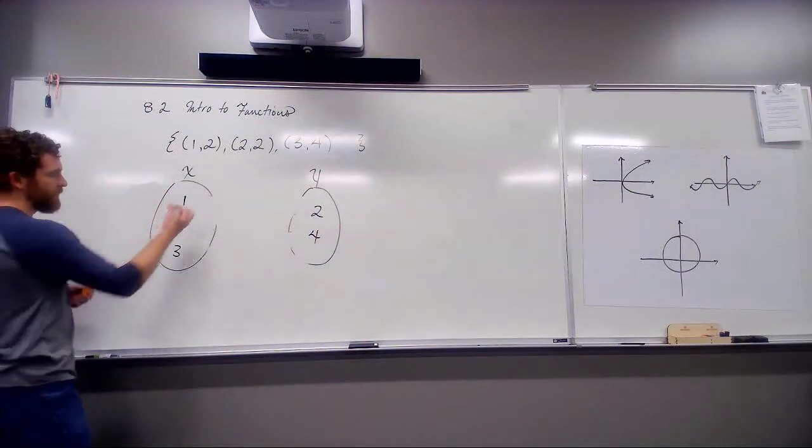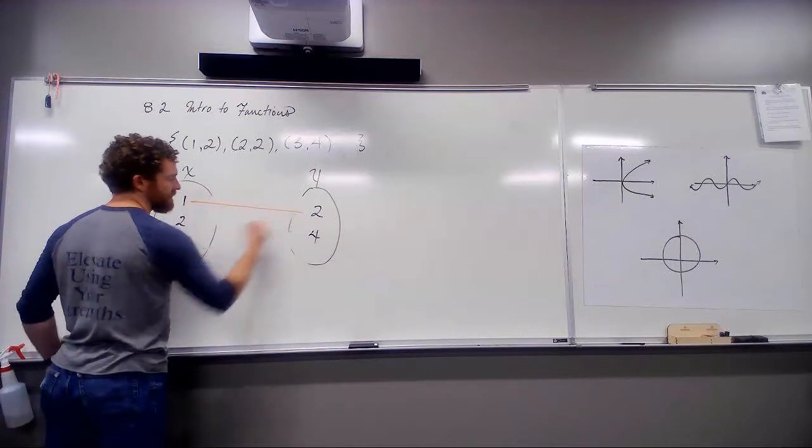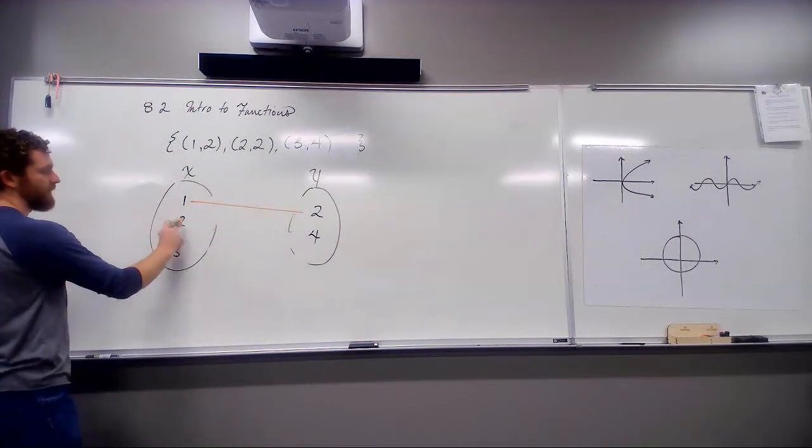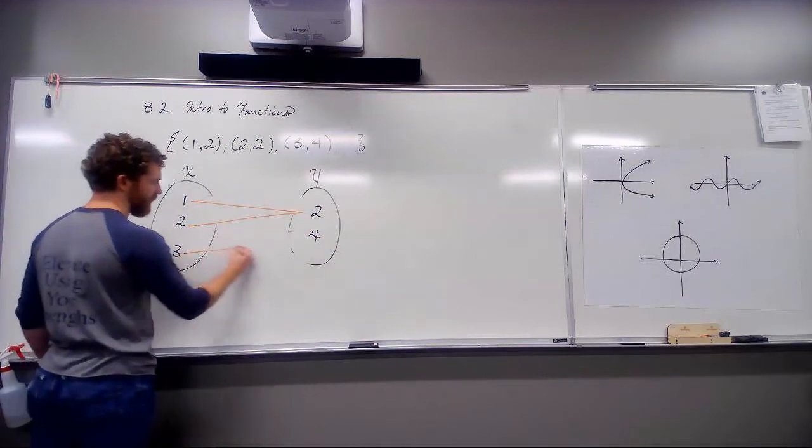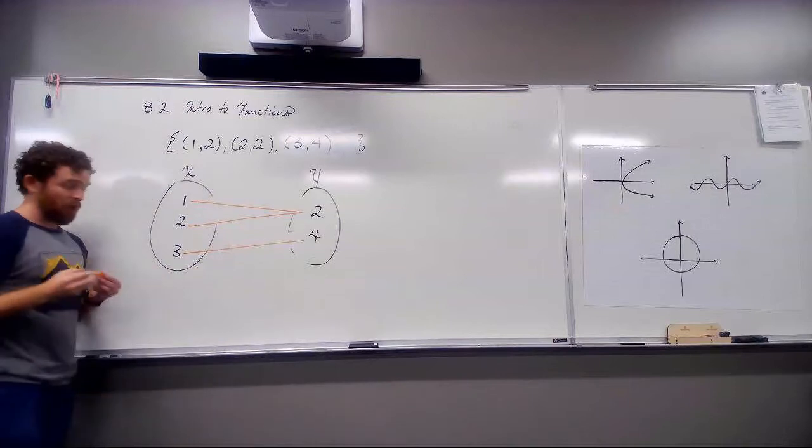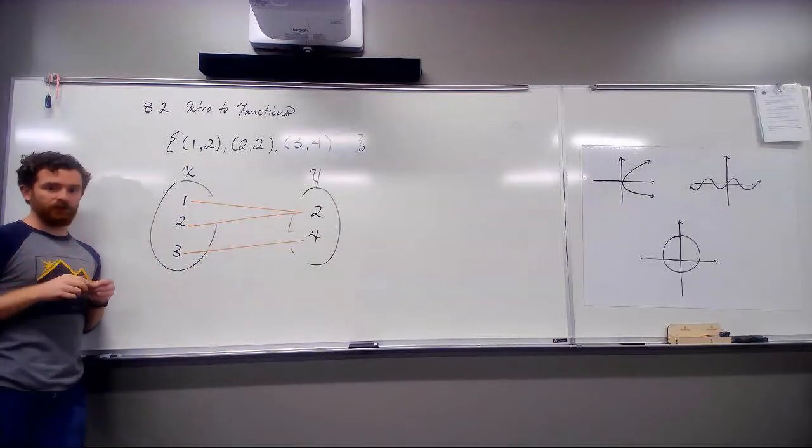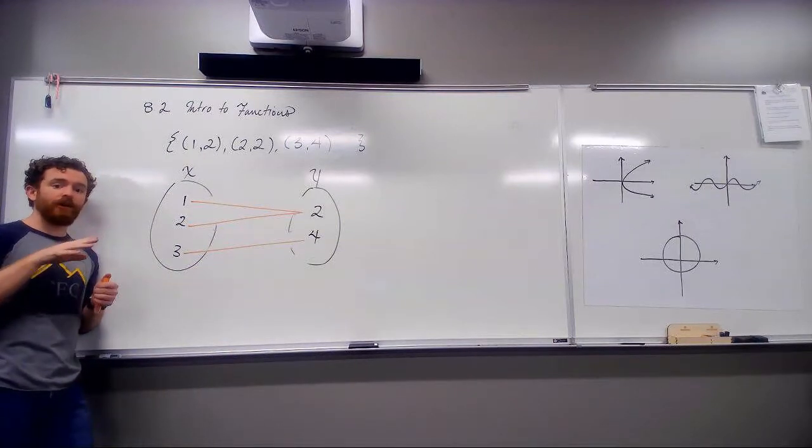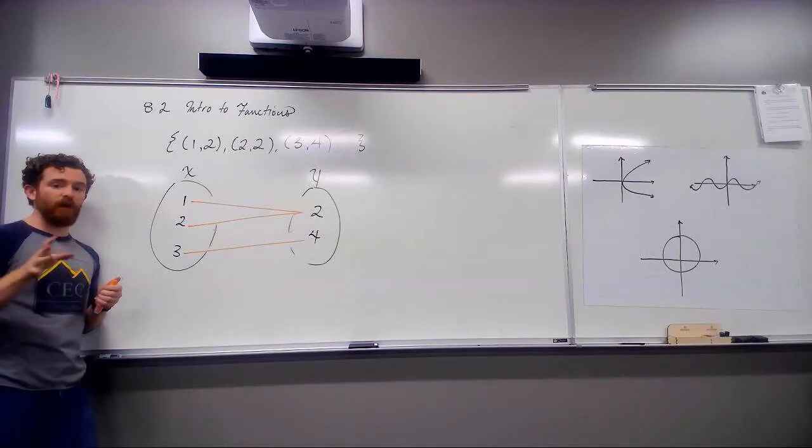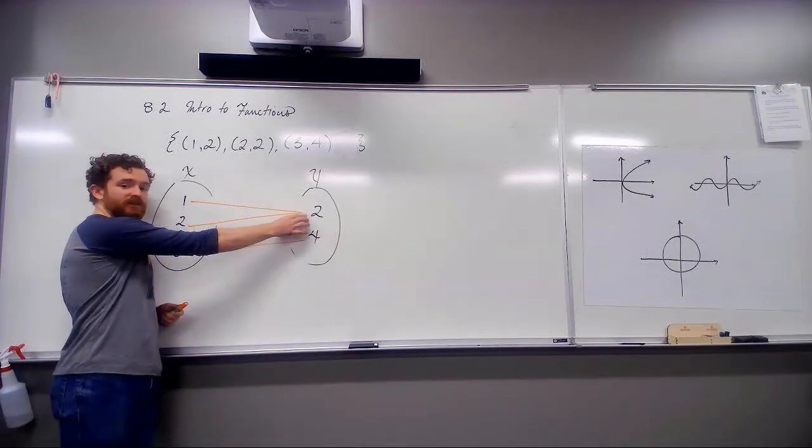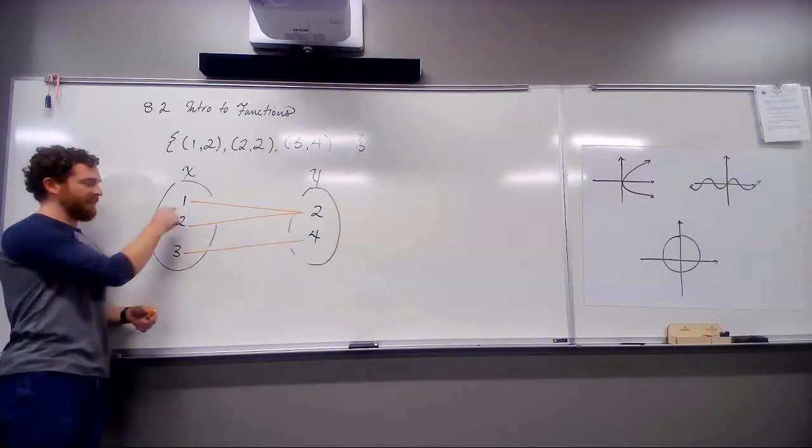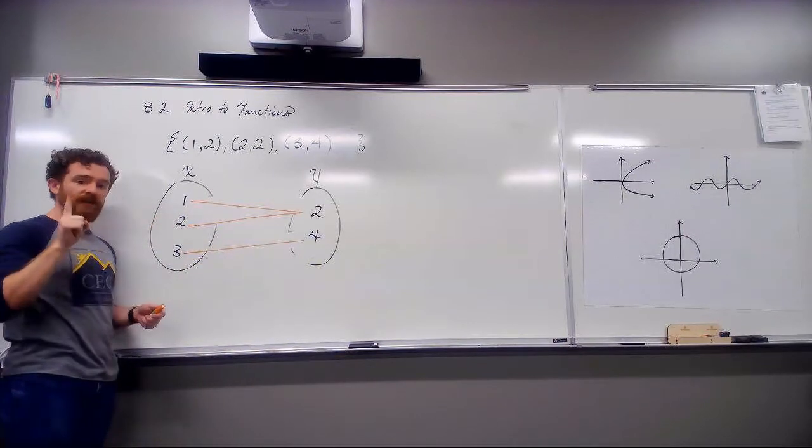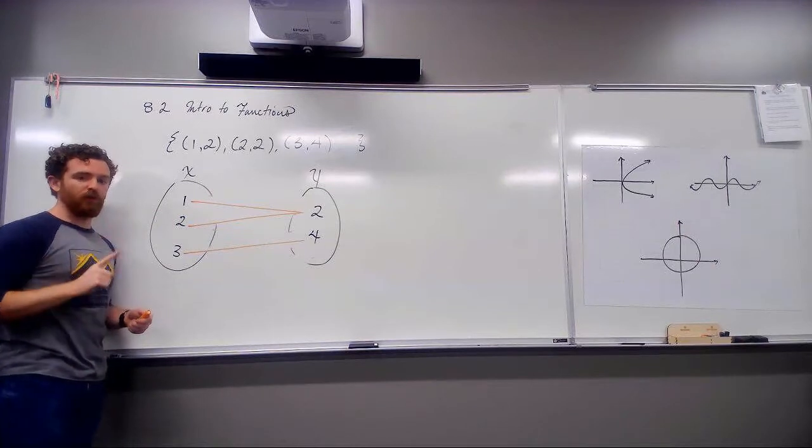We have that one to two, two to two, three to four, and three to five. So, this one is a function. Remember, we only care if the x's are paired with multiple lines. The fact that this two has two lines going to it doesn't matter to us at all when it comes to a function. Because each one of these only has one line, we're good to go. We know it's going to be a function.